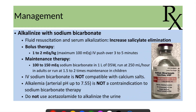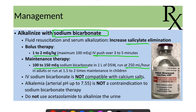Sodium bicarbonate is the main treatment for salicylate toxicity and helps by increasing salicylate elimination. Bolus therapy usually includes 1–2 mEq/kg IV push over 3–5 minutes, followed by maintenance of 100–150 mEq of sodium bicarbonate in 250 mL per hour. IV sodium bicarbonate is not compatible with calcium salts, so we should be careful when managing coexisting hypocalcemia. Alkalosis is not a contraindication to sodium bicarbonate therapy, so we should not delay it in salicylate poisoning.